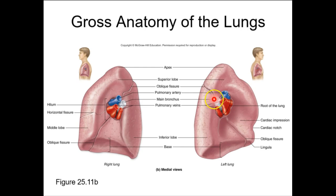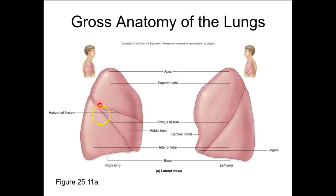Additionally in this image you have the diaphragmatic surface, some fissures — the horizontal fissure, the oblique fissure on the right lung, and since the left lung only has two lobes, it only has an oblique fissure.